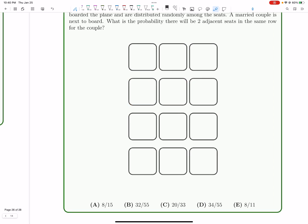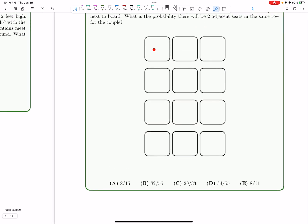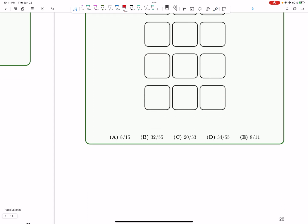How many of these pairs of seats on the same row are there? Well, there's two in the first row, two in the second row, and so on. There's two for each row, right? You take the first and the second seat or the second and the third seat. There's two ways to choose two adjacent seats in each row for a total of eight ways to choose two adjacent seats in any row amongst all four of these, times four.